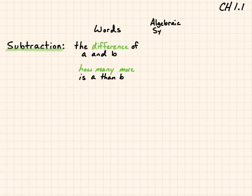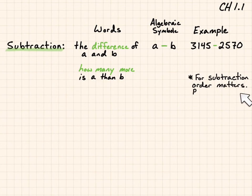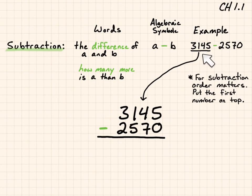The algebraic symbol to show subtraction is the horizontal line between two numbers. Let's go over an example. If I had 3,145 minus 2,570, the first number for subtraction, order matters. Put the first number on top. So the 3,145 went on top. The 2,570 went on the bottom.